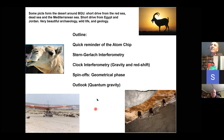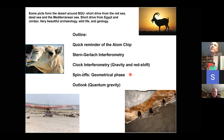The outline is: first, a quick reminder of what the atom chip is; then what is Stern-Gerlach interferometry — very different from what Stern-Gerlach did 100 years ago; then clock interferometry based on Stern-Gerlach interferometry, which brings in gravity and redshift; then briefly a spin-off — if you do clock interferometry you also encounter geometrical phase; and then an extended outlook connecting to quantum gravity.